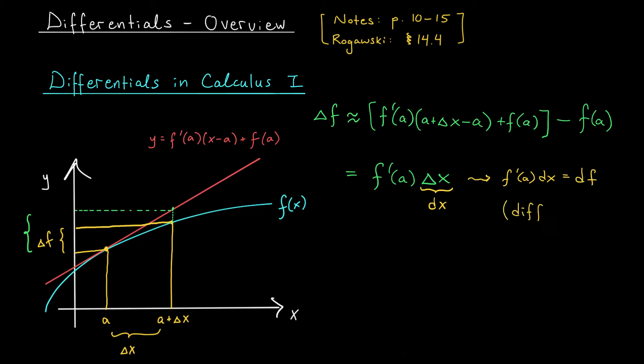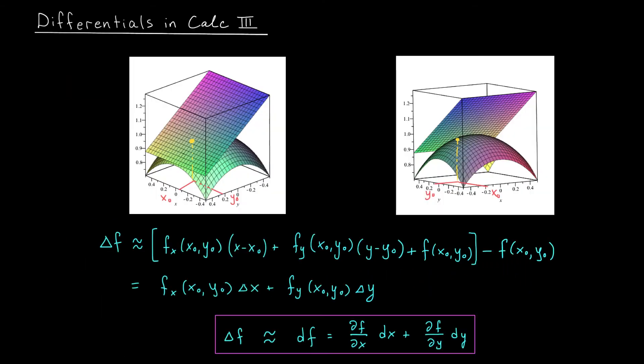It's the approximate change in the value of the function resulting from a small change in the inputs. So what we've just said is that delta f, the actual change, is approximately equal to the differential df, which is f'(a) dx. Now that we've had a chance to review differentials from calculus one, we're ready to explore this concept in calculus three.